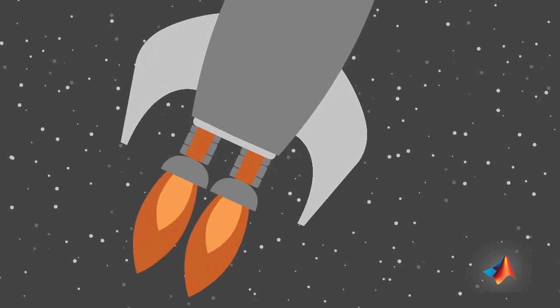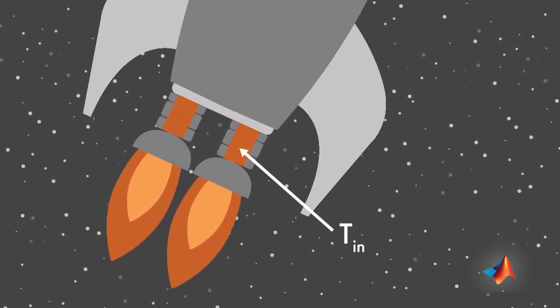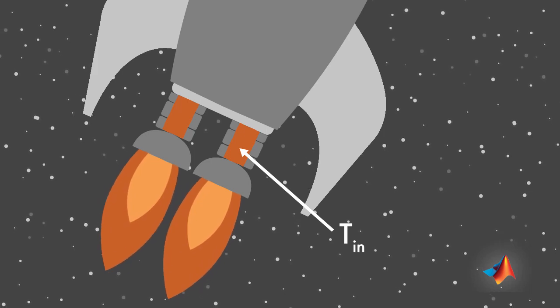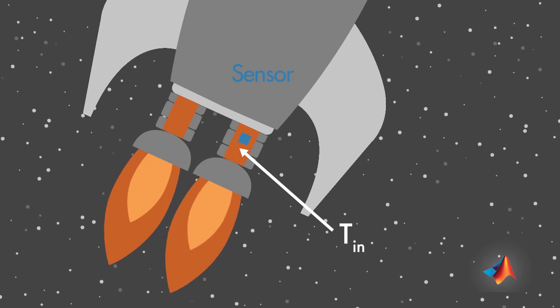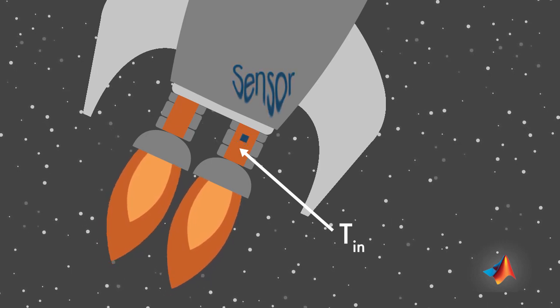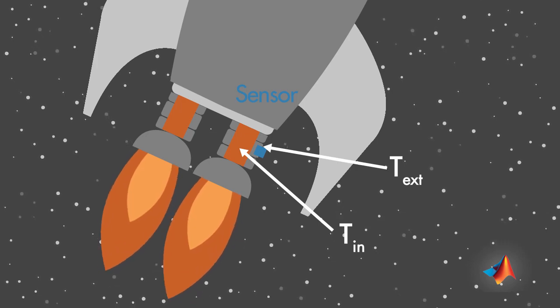To prevent such a situation, you should closely monitor the internal temperature of the combustion chamber. This is not an easy task, since a sensor placed inside the chamber would melt. Instead, it needs to be placed on a cooler surface, close to the chamber.